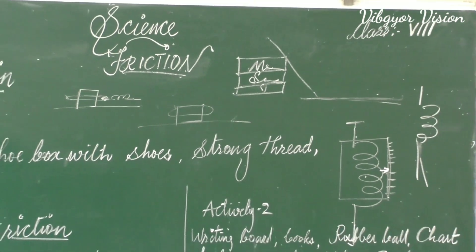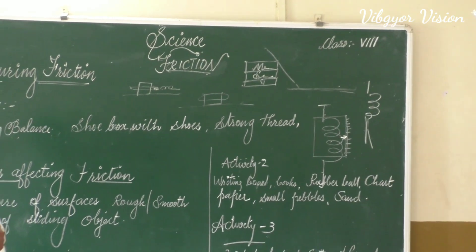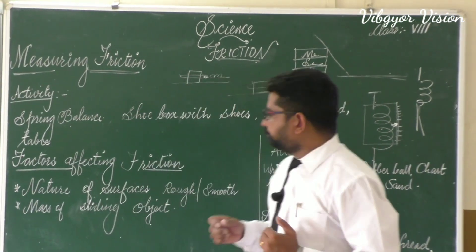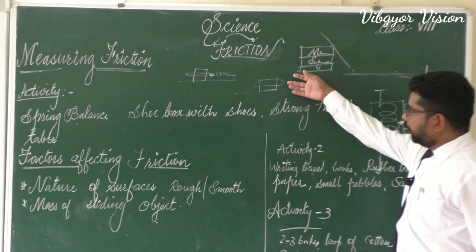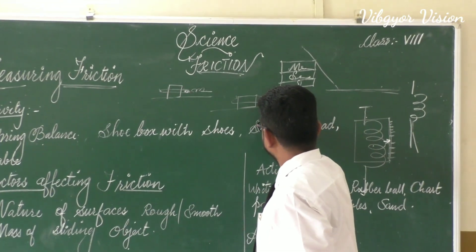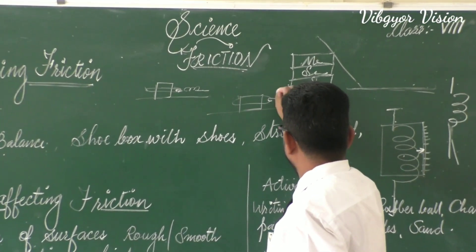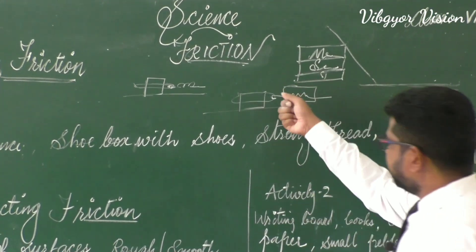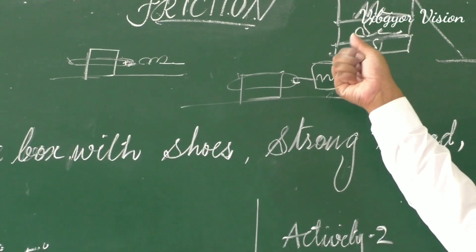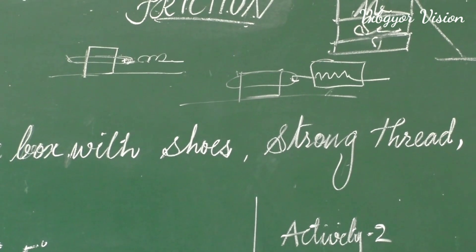In the same manner as before, we can measure the friction here. We have connected the spring balance. We apply force, then we can see what the force is — that means what is the frictional force — and we get it from the spring balance reading.